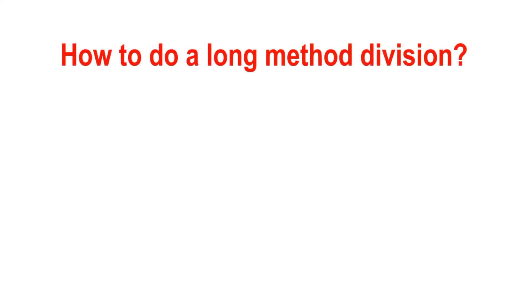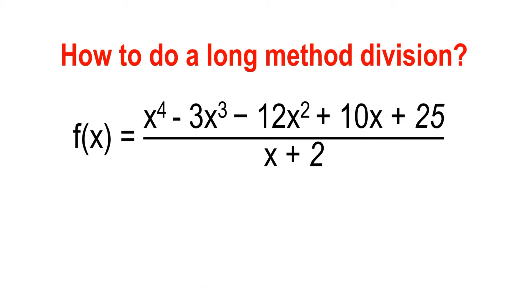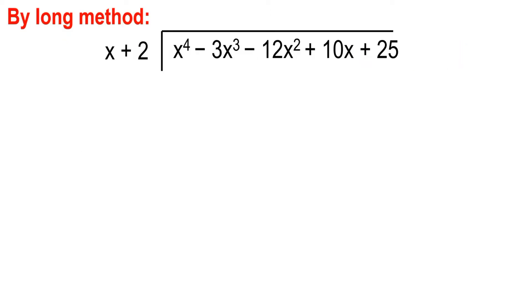So, how to do a long method division? Let us consider this example: x raised to 4 minus 3x cubed minus 12x squared plus 10x plus 25, divided by x plus 2. I just rewrite it here in this format, and we will do the long method. We will divide each term by our divisor.